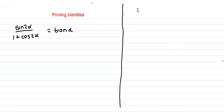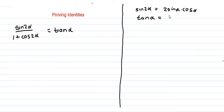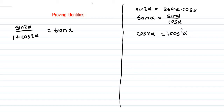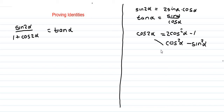We can expand sin 2α as two sine alpha cos alpha. And tan alpha is sine alpha over cos alpha. For cos 2α, we can expand it in three ways: as cos squared alpha minus sine squared alpha, or as two cos squared alpha minus one, or as one minus two sine squared alpha.